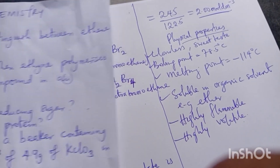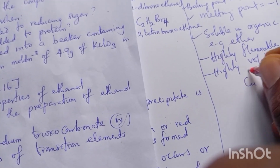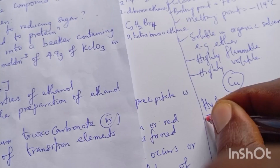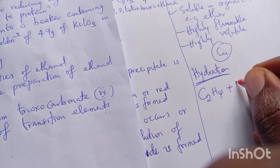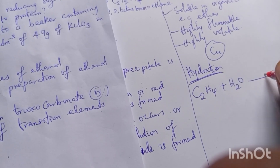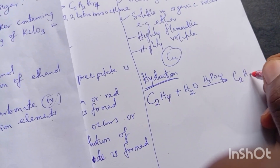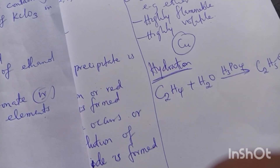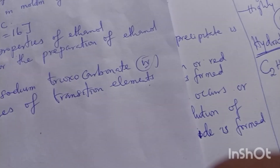Part (c)(ii): write the equation for the preparation of ethanol from ethene. This process is called hydration. The equation is: C₂H₄ + H₂O → C₂H₅OH, in the presence of H₃PO₄ as a catalyst.